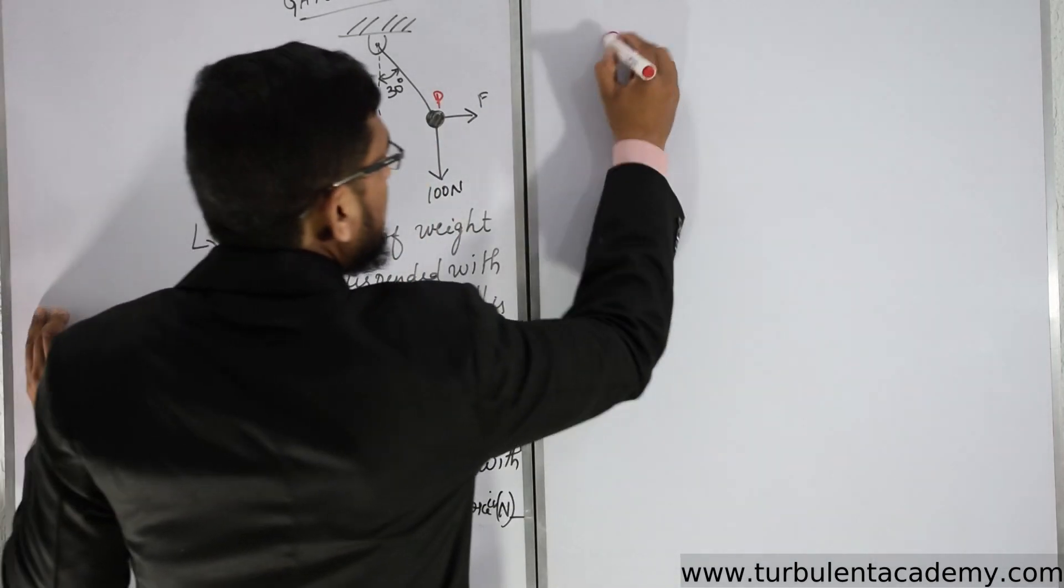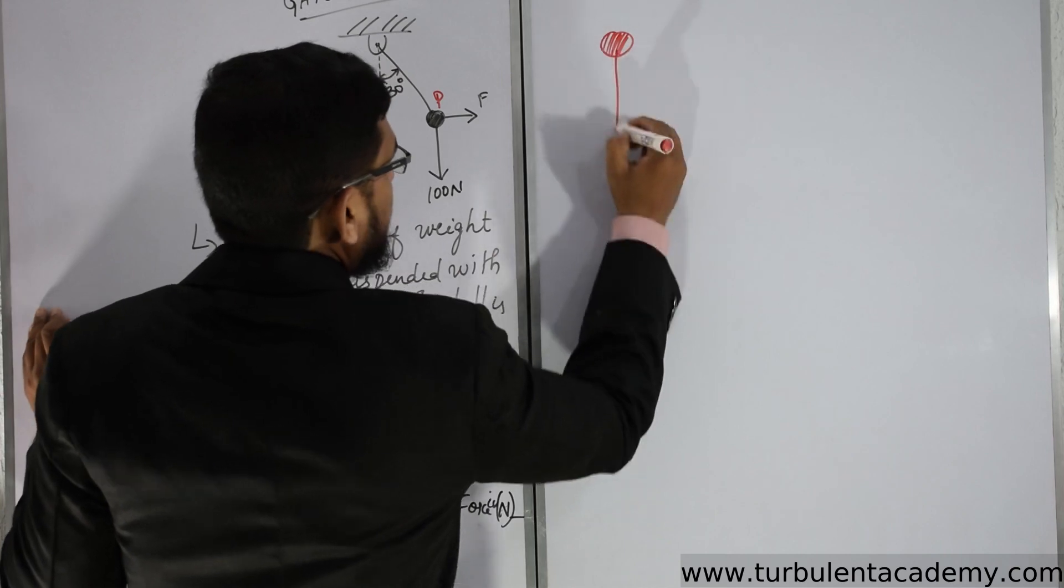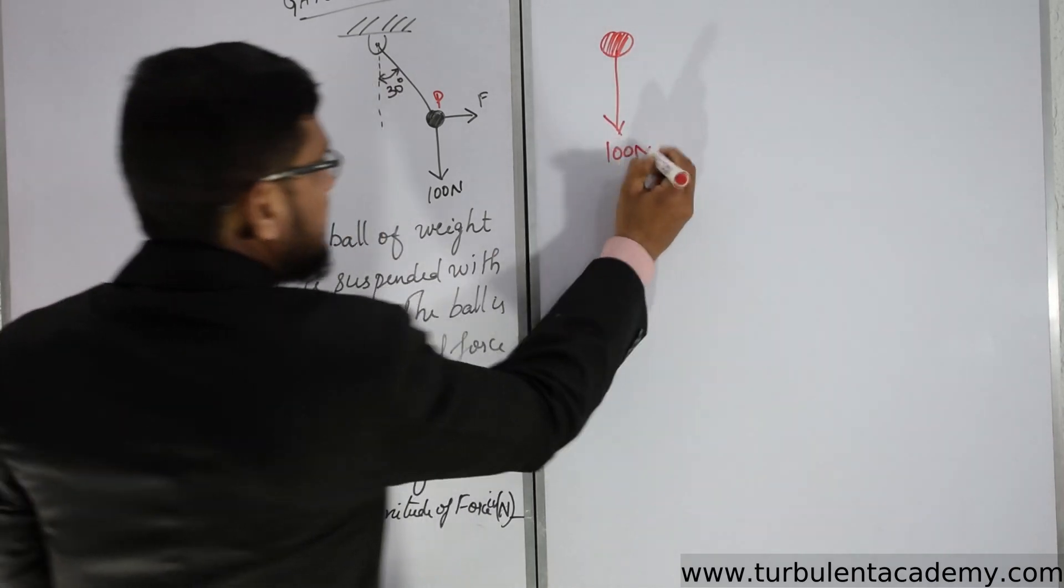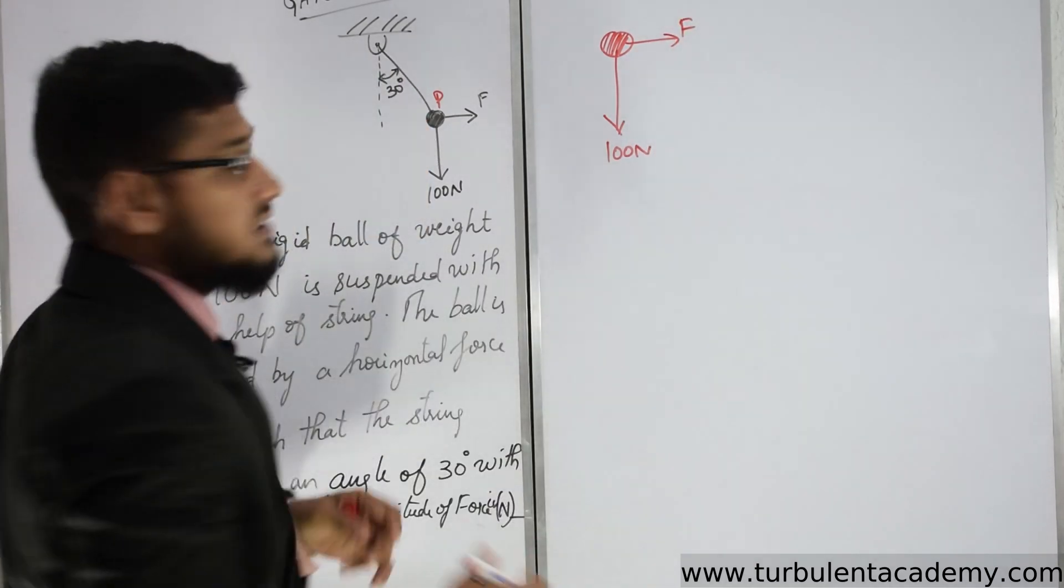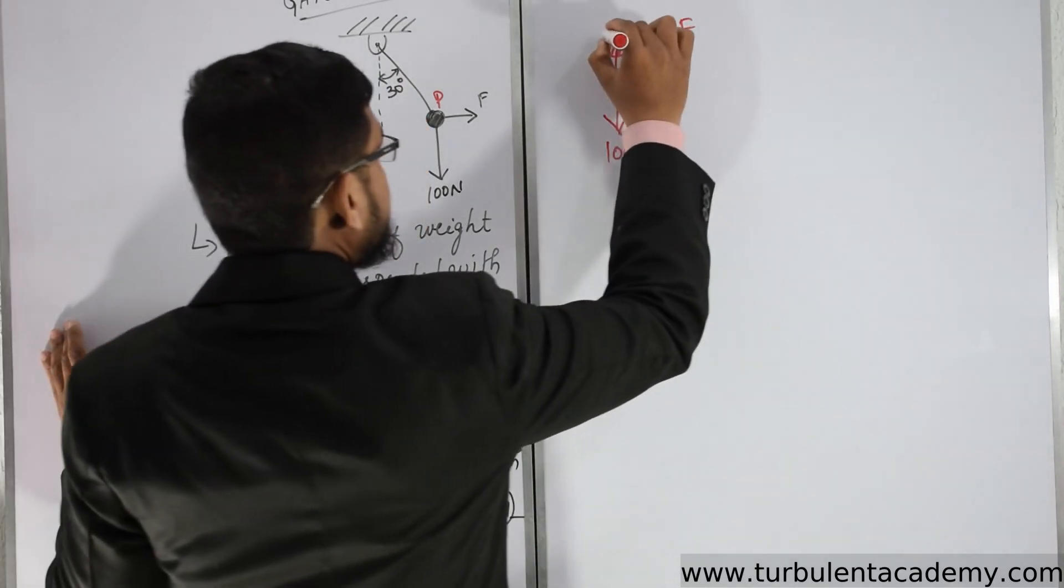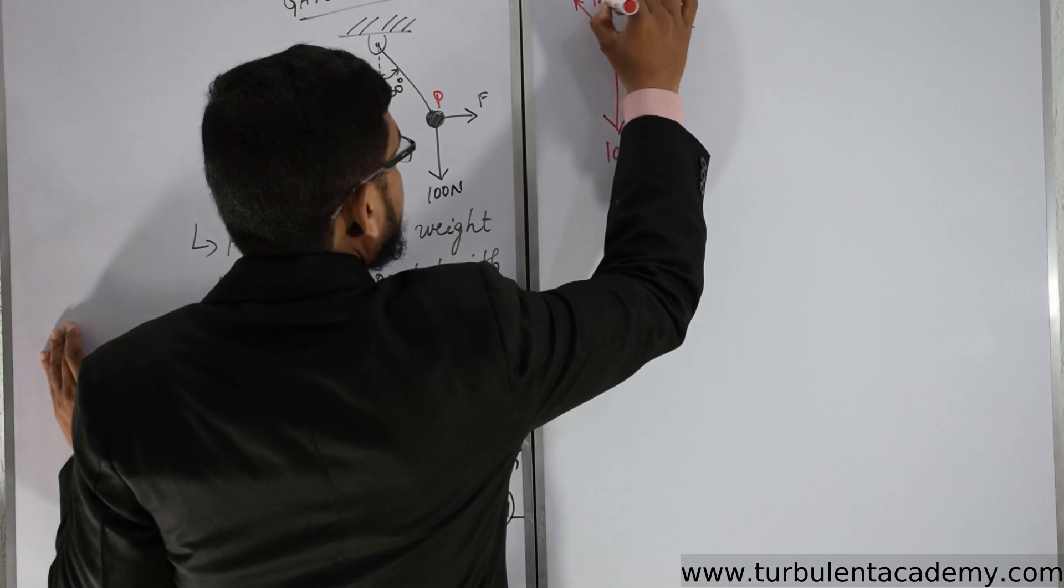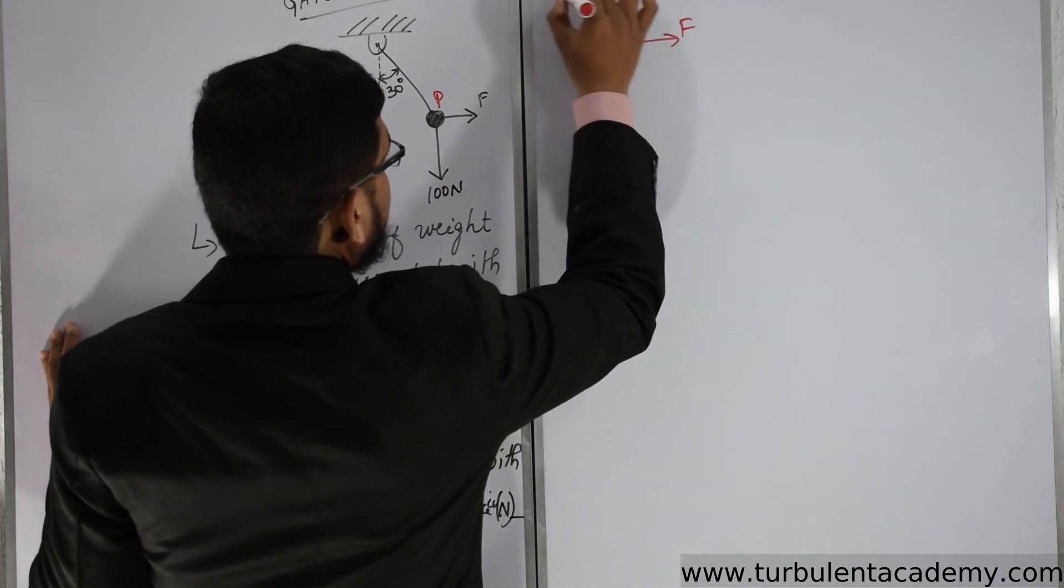I have a ball, 100 Newton. What is the next force acting on it? Force F. What is the next force acting on it? T, the string tension. So this makes 30 degrees.